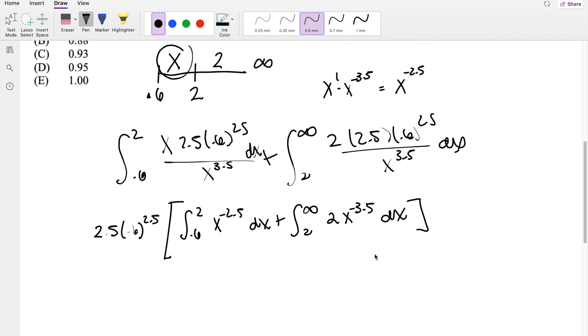So integrating this sucker out, here it's going to be, you add 1, so that's going to be negative 1.5, divided by negative 1.5 here, going from 0.6 to 2, plus right here, it's going to be adding 1, so that's negative 2.5, divided by negative 2.5, or 2 over 2.5, going from 2 to infinity.